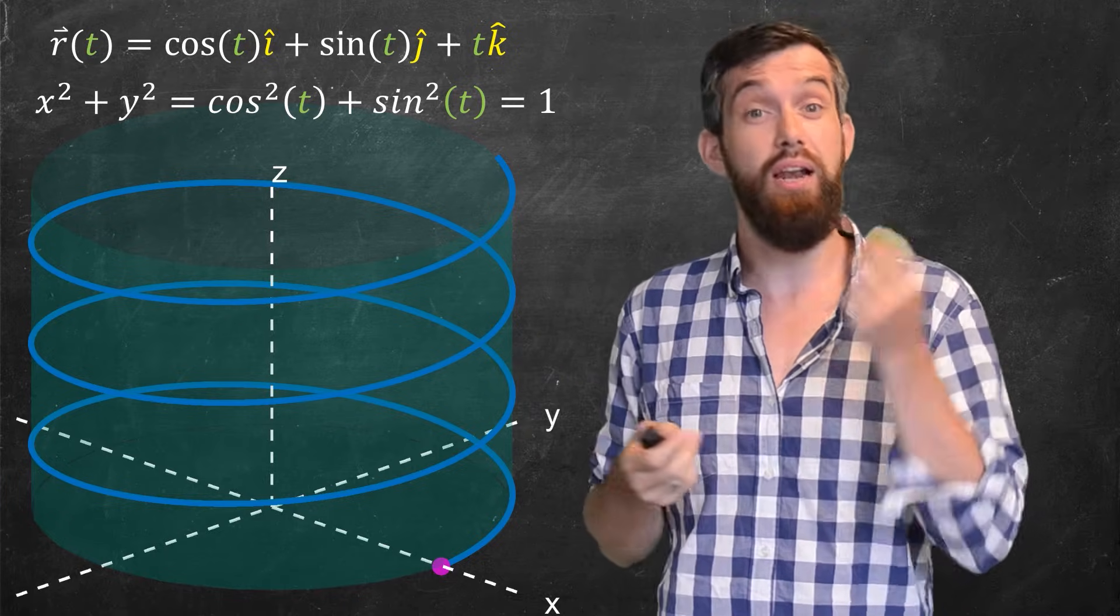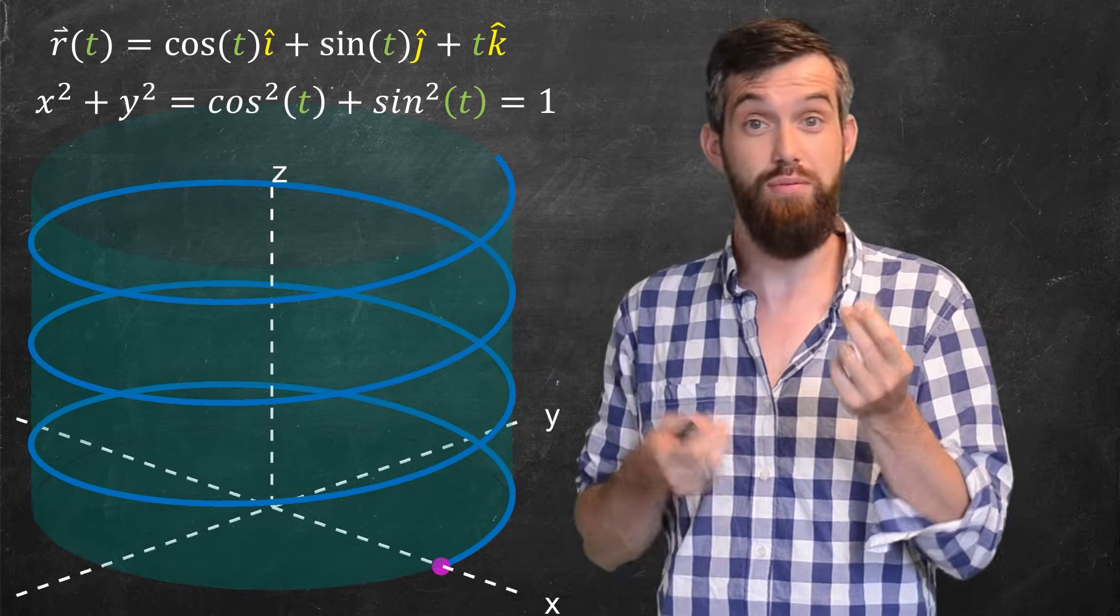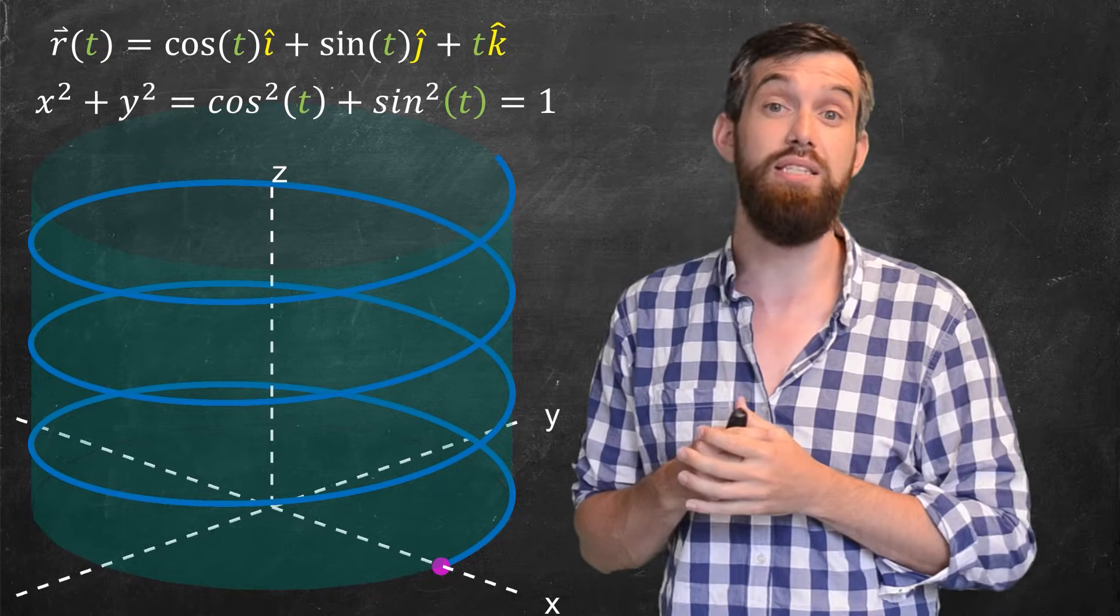One example of these in nature is if you take an electron and you put it in the presence of a constant magnetic field, you can get helixes something like this.